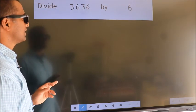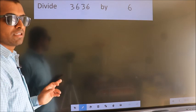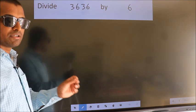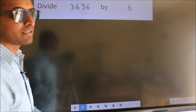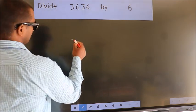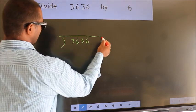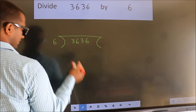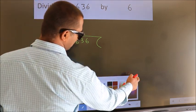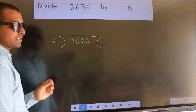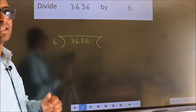Divide 3636 by 6. To do this division, we should frame it in this way: 3636 here, 6 here. This is your step 1. Next.